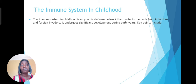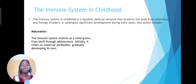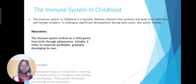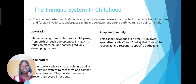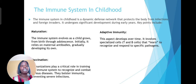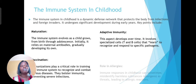Now let's look at the immune system in childhood, which is a dynamic defense network that protects the body from infections and foreign invaders. Key points to note: in a child, the immune system is developing — it grows from birth through adolescence and relies on maternal antibodies. Vaccination and immunization are very critical during childhood as it helps the immune system to recognize and combat infectious diseases. That is why most immunizations are given to children when they are young. Adaptive immunity develops over time and involves specialized T and B cells that learn and recognize specific pathogens.